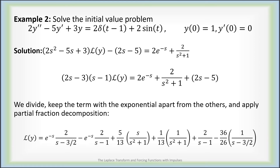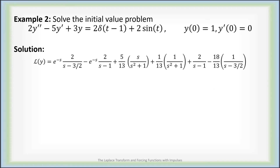We keep the exponential term apart from all the other rational terms that don't have an exponential. After doing all of that work and then applying partial fraction decomposition on everything divided by (2s minus 3) and (s minus 1), you'll end up with an exponential times two rational terms and then all of these rational terms on their own. So the Laplace transform of y has two exponential terms times rational functions and then a bunch of rational terms.